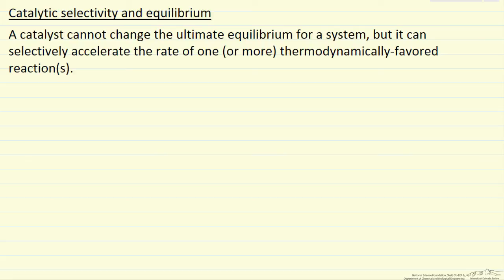So a catalyst cannot change the ultimate equilibrium for a system, but it can selectively accelerate the rate of one or more thermodynamically favored reactions, such that when we calculate equilibrium, we can only take into account some of the possible reactions. This is a very important property of a catalyst.